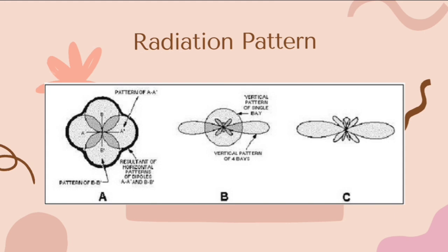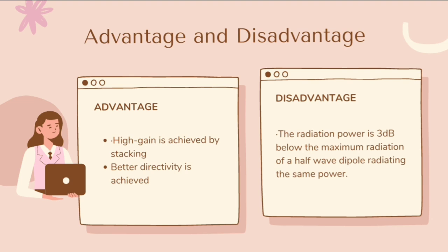This figure shows the radiation pattern of a turnstile array. The typical figure-of-eight patterns were combined to produce a nearly circular pattern. Figure A shows the individual patterns being combined. Figure B shows the vertical pattern of a single bay and also the combined pattern of four bays. Figure C shows the resultant combined pattern of four bays showing better directivity. The advantages of turnstile antennas are that high gain is achieved by stacking and better directivity is achieved. The disadvantage is that the radiation power is 3 dB below the maximum radiation of a half-wave dipole radiating the same power.